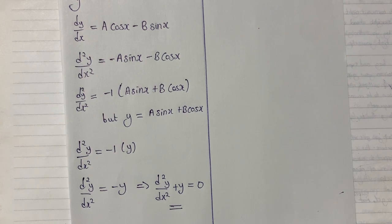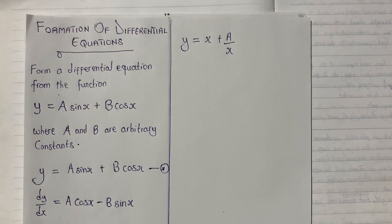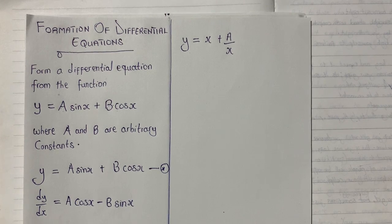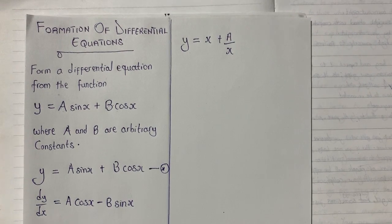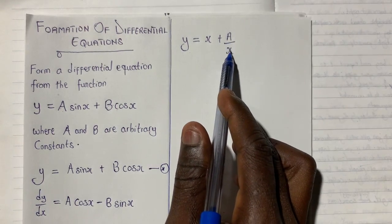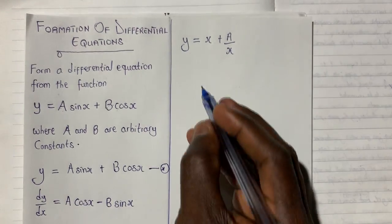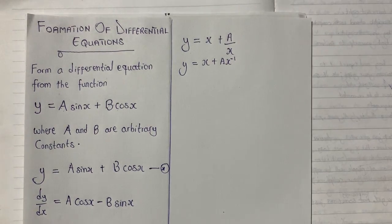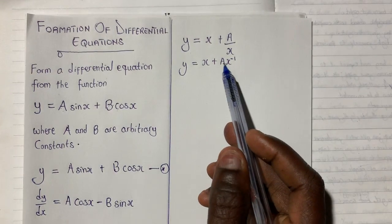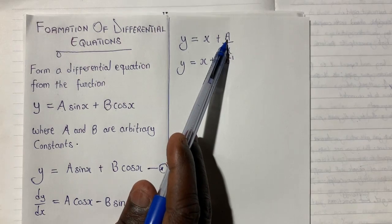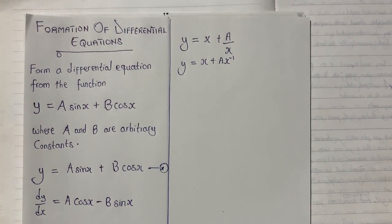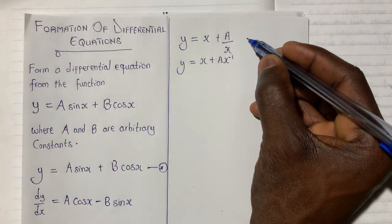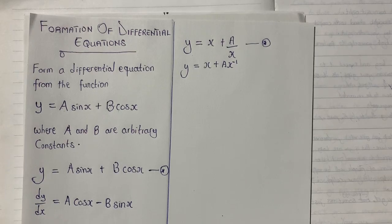Now we have been given a new function and told to form a differential equation from it. Before I can do this, I need to change the equation into a linear form so that I can differentiate it simply. Since there is a fraction, I rewrite the equation as y equals x plus a·x raised to the power minus one. How many arbitrary constants do we have? Only one, which is a. That means we differentiate the equation only once. Let me name this equation star.